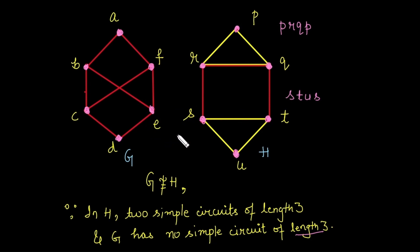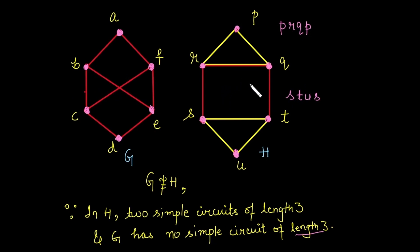In simple terms, if two graphs are isomorphic, whatever property graph G has, graph H must also have. If G has a simple circuit of length 4, H must also have one. If G has two simple circuits of length 4, H must also have two. If any one property differs — something present in G but not in H — then the two graphs are clearly not isomorphic.